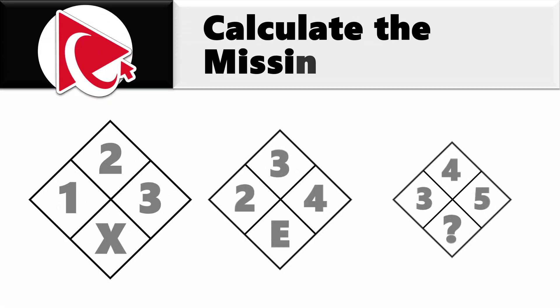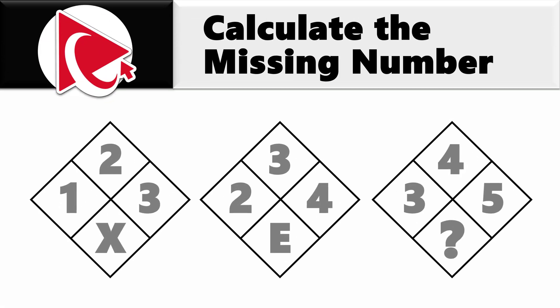You're presented with 3 diamonds. Each diamond has numbers and letter inside. If we look across all 3 diamonds, at 9 o'clock we have numbers 1, 2 and 3.